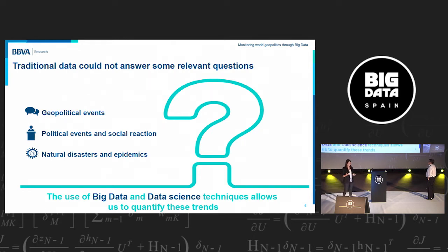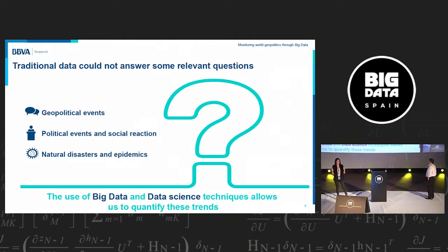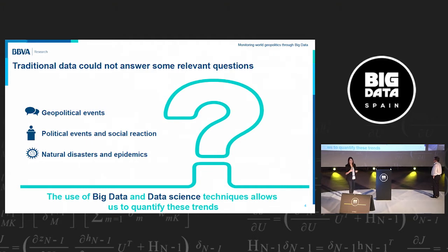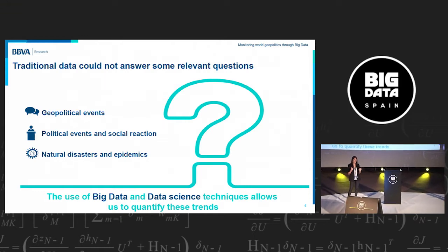Examples of these events include geopolitical events like the Arab Spring, which increased instability in the Middle East and North Africa to levels not seen before. We also have geopolitical events like elections, independence movements such as Brexit or the Catalan situation, and the rise of populism. We also previously had no way of measuring natural disasters like earthquakes or epidemics like Ebola. With this database, we can quantify all these trends.